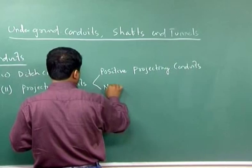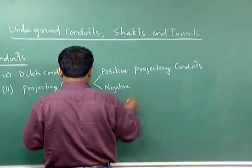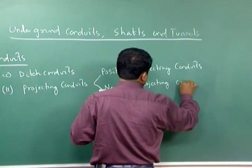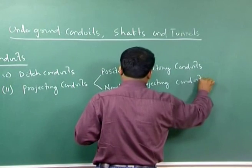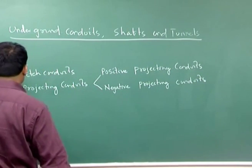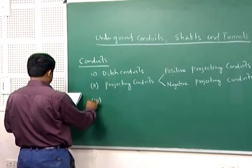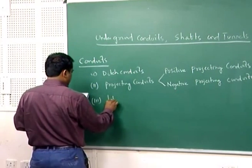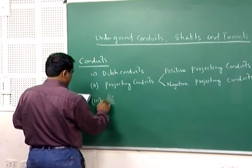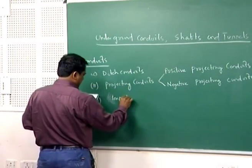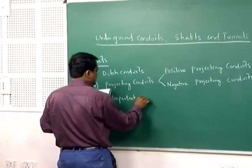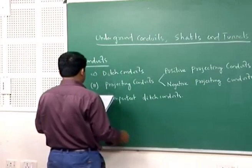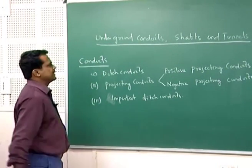Then negative projecting conduits. The third one is a special type called imperfect ditch conduits.